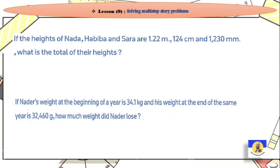If the heights of Nada, Habiba and Sara are 1.22 meter for Nada, 124 cm for Habiba, and Sara is 1230 mm, what is the total of their height? To do plus between them, we need same units. We need to change them all to either meter, millimeter, or centimeter. Take your decision and work on it.